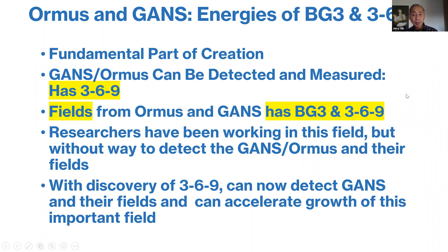GANs and ormus can be measured and detected with a special pendulum — a 3-6-9 pendulum — which I described how to make in another YouTube video. The fields that ormus and GANs produce have both BG3 and 3-6-9 subtle energies. Researchers have been working in this field a long time, but they have not had a way to detect GANs and ormus without a lot of hassle. But the fields and the GANs can now be detected with both BG3 and 3-6-9 pendulums, and this should help accelerate the growth of this very important field.